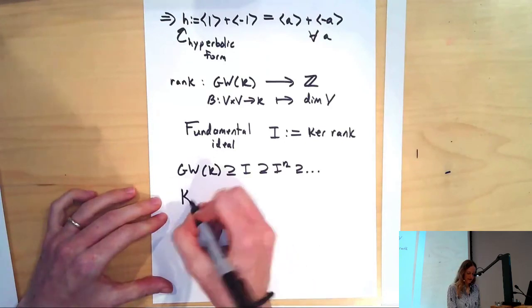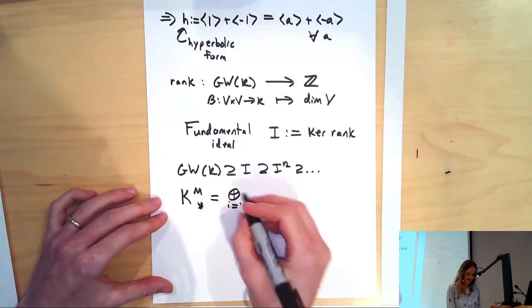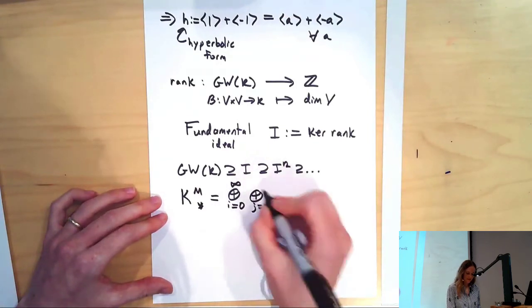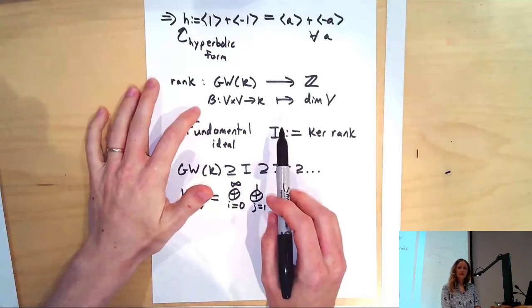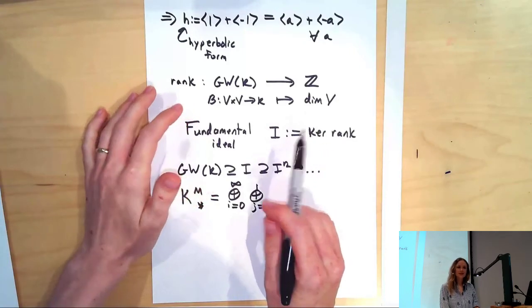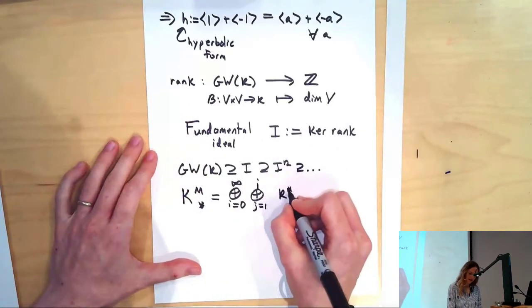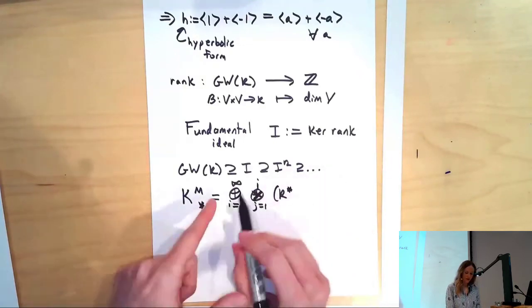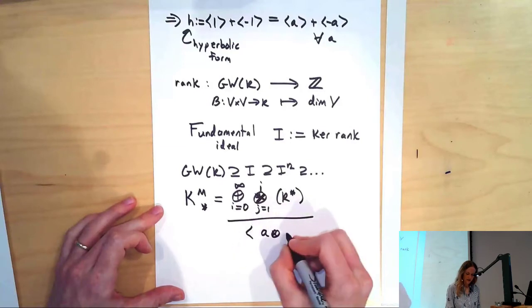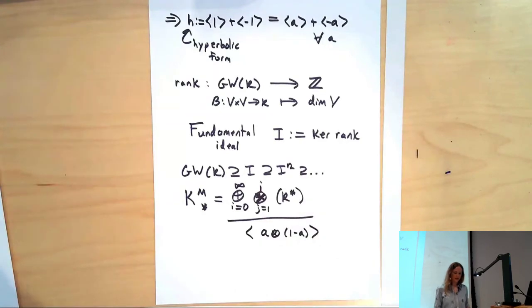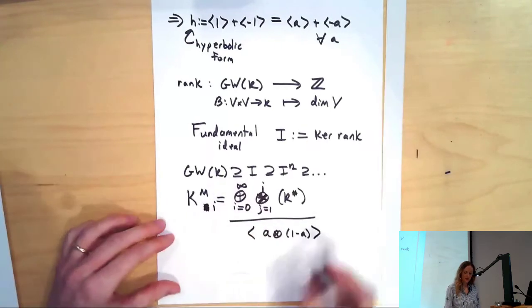Let's define Milner K-theory. We take the free tensor algebra on K*. We divide out by the Steinberg relation. So we divide out by the ideal generated by i ⊗ (1 - i). And the degree n part of this is when i is, well, we could say i here. So these are the Milner K-theory groups.